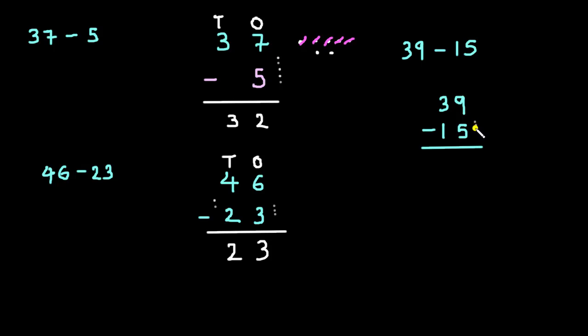So, 8, 7, 6, 5, 4. 9 minus 5 is equal to 4. 3 minus 1. So, as we know, if we add 1 to any number, you can find the next number. So, if you subtract 1 from any number, you can find the previous number. So, previous number or number before 3 is 2. 39 minus 15 is equal to 24.